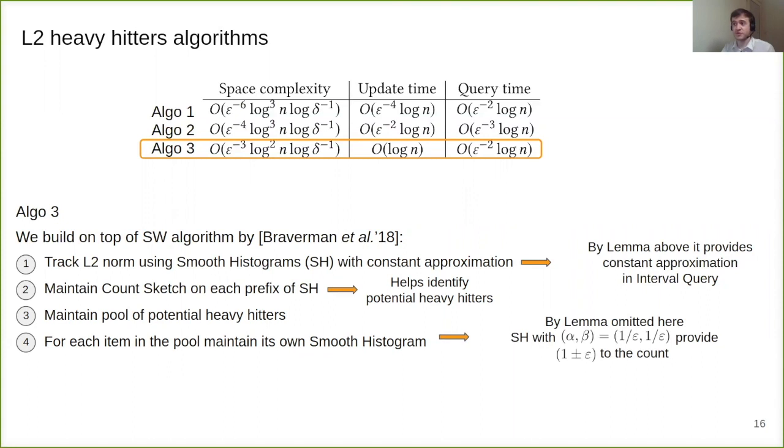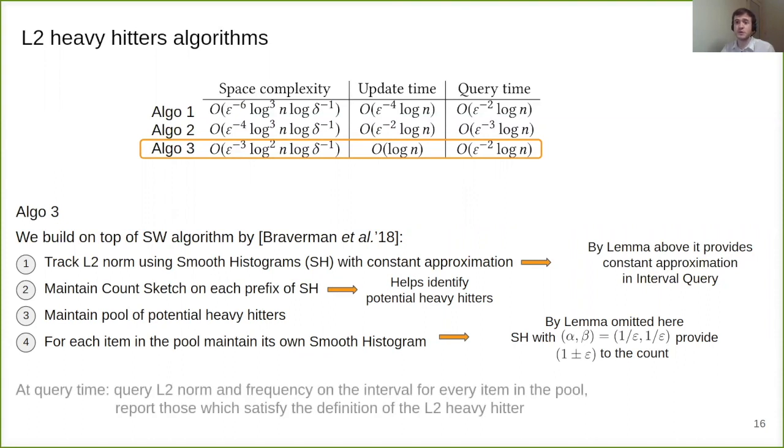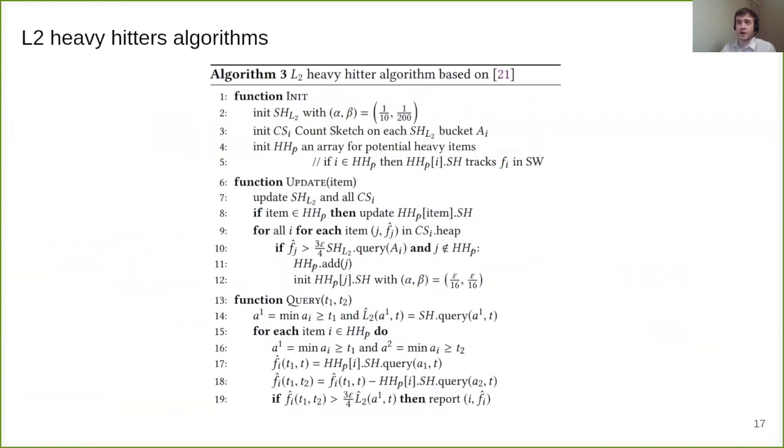By lemma omitted here, smooth histograms with alpha, beta equal to one over epsilon provides one plus minus epsilon approximation for the count. At query time, we query L2 norm and the frequency on the interval for every item in the pool and report those items which are crossing the epsilon over two L2 norm of the tail as by definition of the heavy hitter. So basically, we're pruning those items which are in the pool.